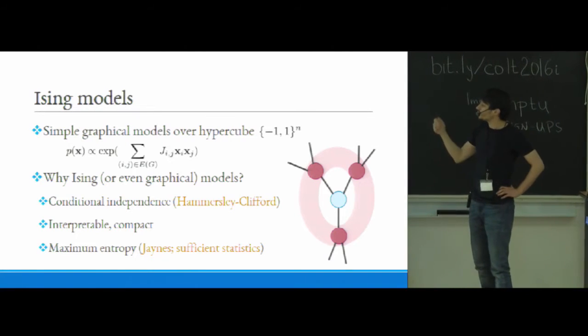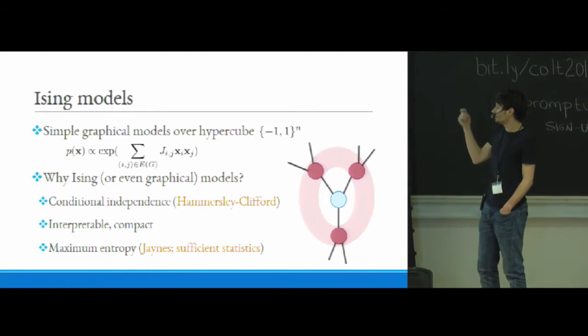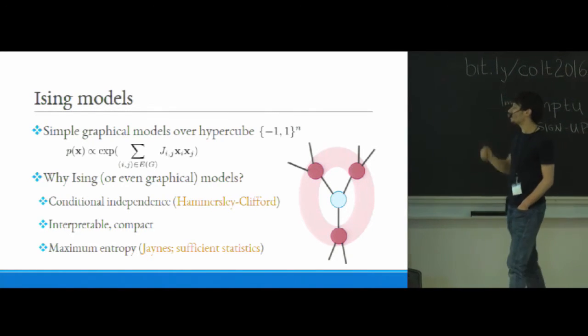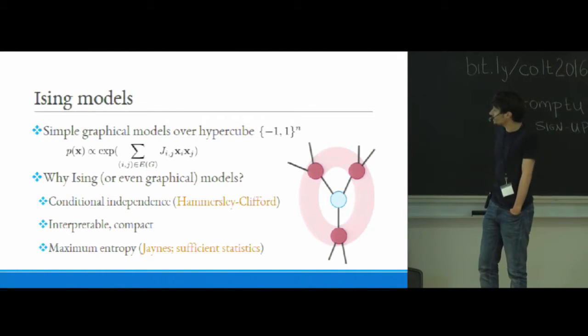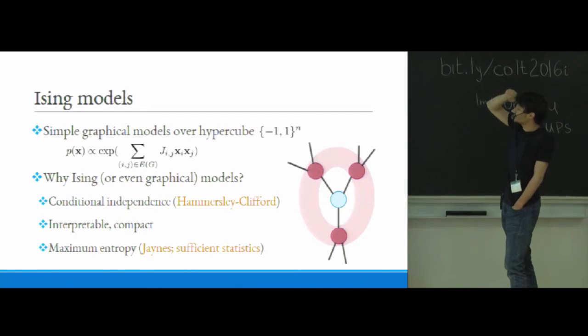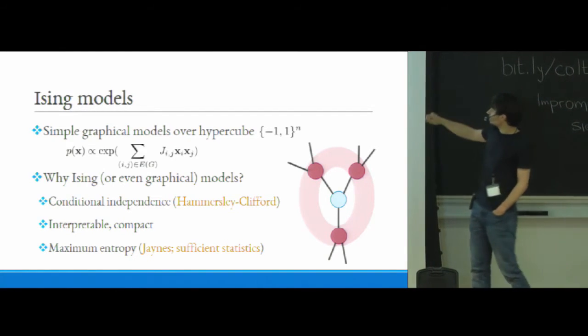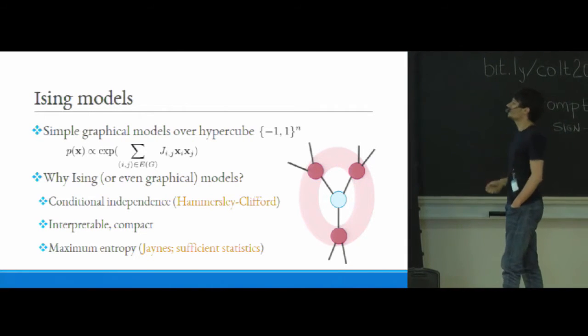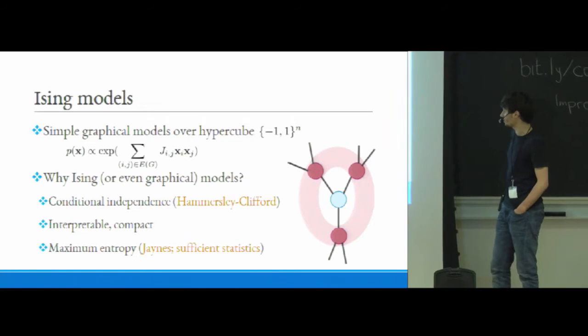So before I move on from this introductory part, let me maybe just very briefly justify to you why these particular probability distributions are sensible or useful or people like them in practice. So the usual typical reasons that people cite are the following. One is they have this nice conditional independence structure. So for example, if you look at the picture on the right, if you look at the blue node and condition on its neighbors, which are the red nodes, then basically that node is independent of anything else. There's also a converse to this, which typically goes by the name of the Hammersley-Clifford theorem, but I don't really want to go into that too much here.